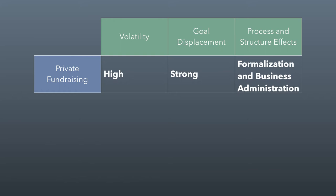So I have a helpful summary table here. Private fundraising volatility is high. Goal displacement is strong. And as far as process and structure effects go, foundations are driving that mostly, in the form of much more formalized processes and more business administration skills — which, by the way, is one of the advantages of doing your MPA in the Marriott School, because business administration skills are taught and emphasized. It actually gives you a leg up on a lot of other MPA graduates from other programs.